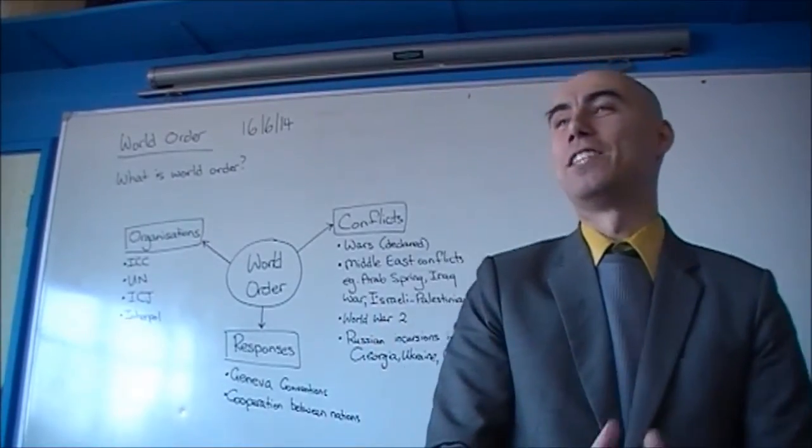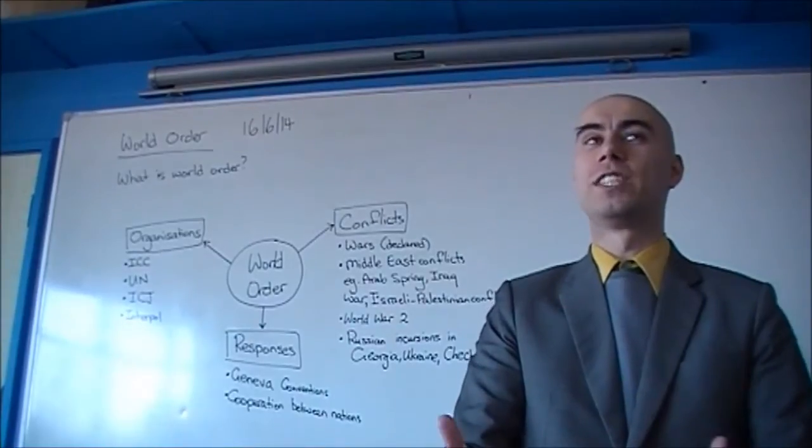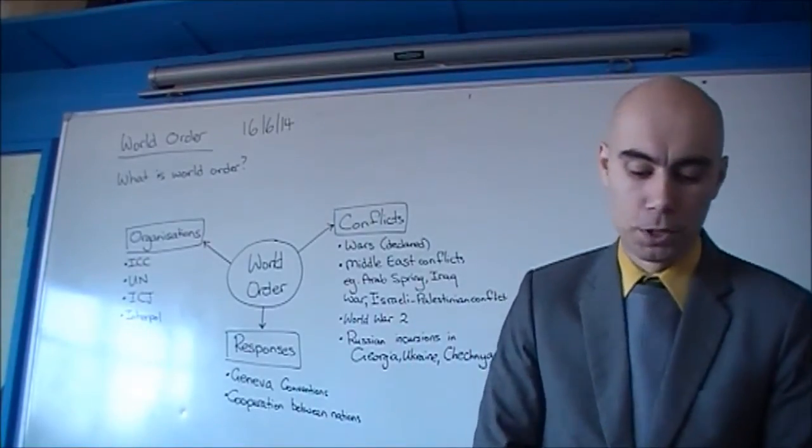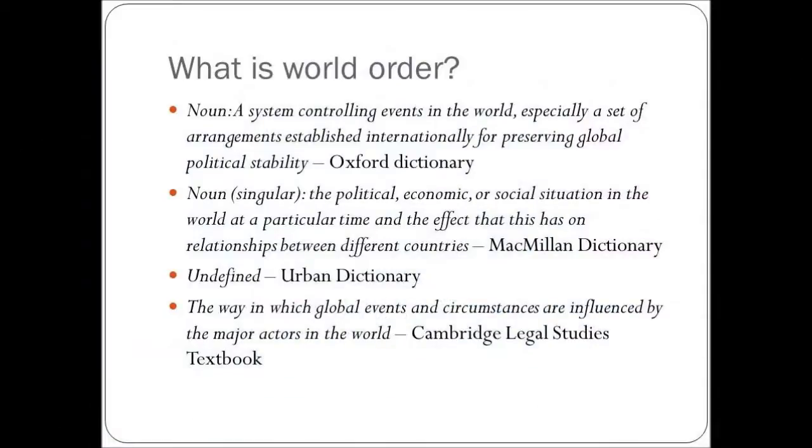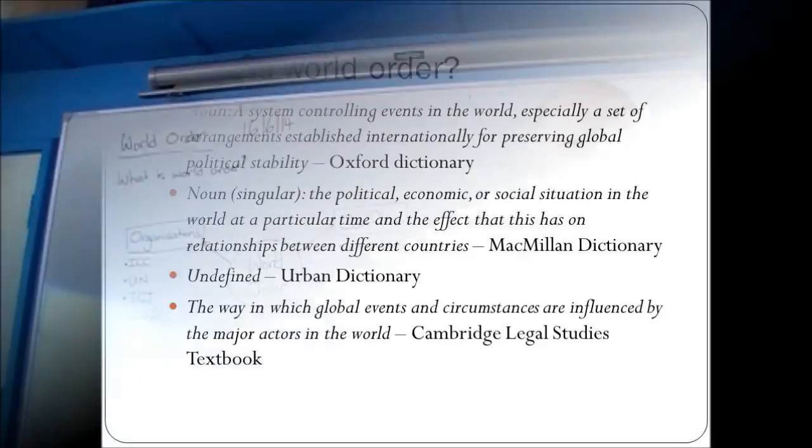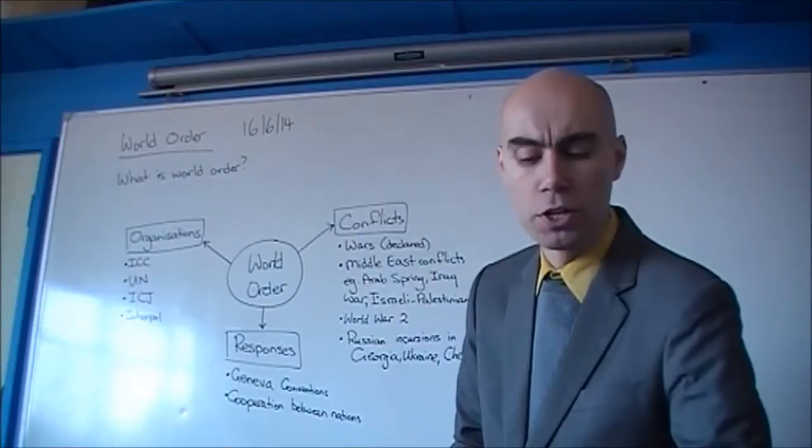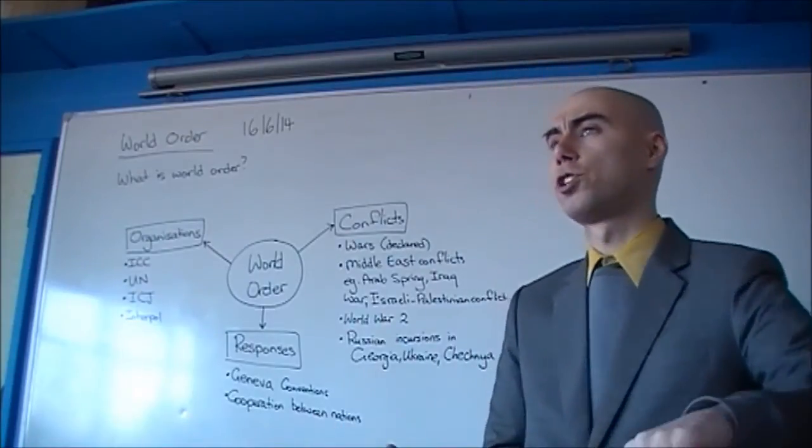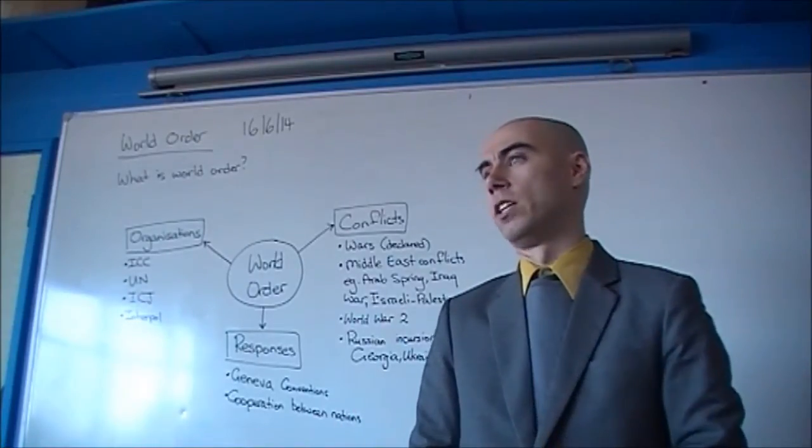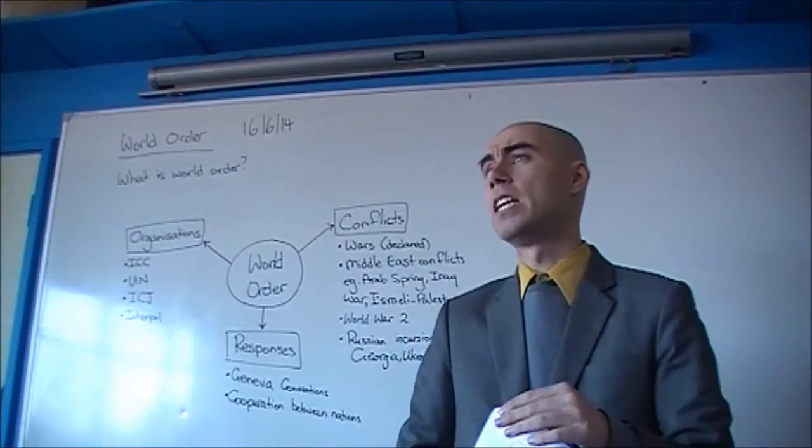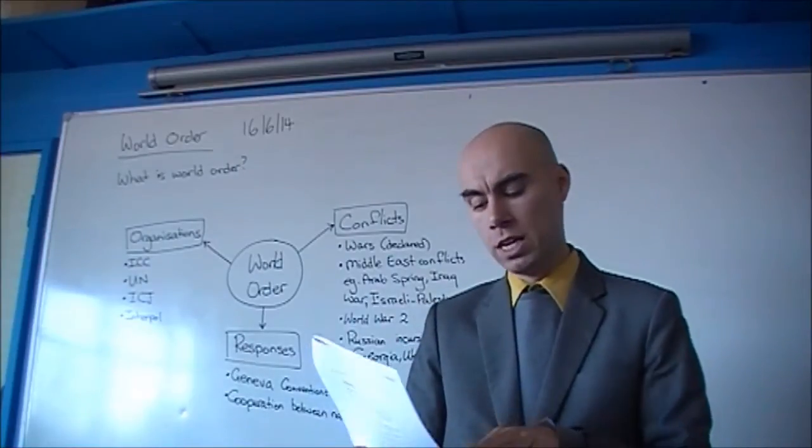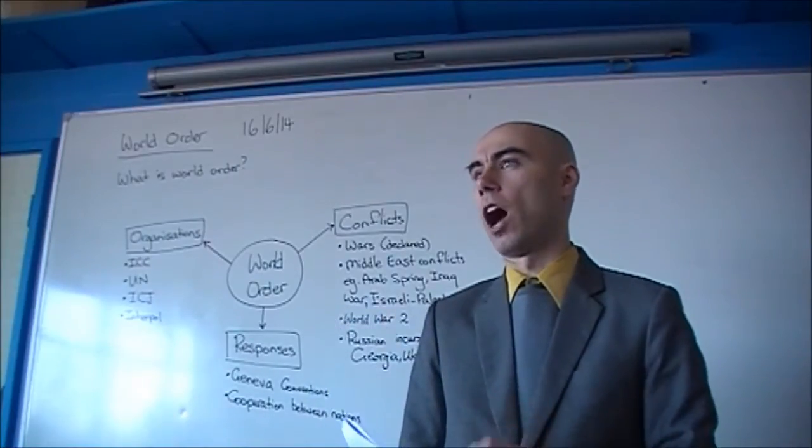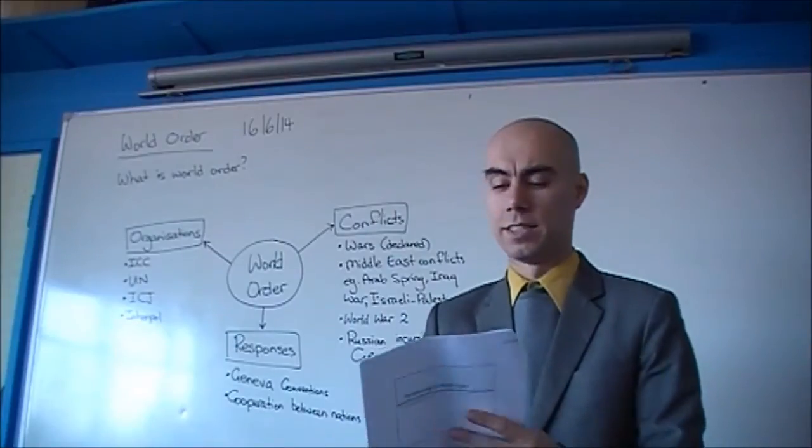I think the best definition you guys can go with, those first two are good to give you a bit of an idea of what some broader definitions are. The textbook definition is, the way in which global events and circumstances are influenced by the major actors in the world. I would go with the last one, but the first two are good to give you a bit of context as well. If you're looking to give an actual definition, that's the one straight out of the textbook. I would go with that one because it's context specific.